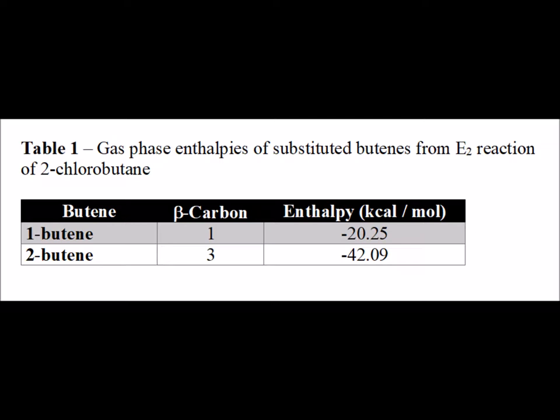Zaitsev's rule tells us that when there is a choice of possible products for an E2 elimination reaction, the most likely product is the most stable alkene, the one that is most branched. Here we can see that this is true quantitatively. The resulting product from abstraction at the first carbon gives us 1-butene with an enthalpy of reaction of minus 20 kcals per mole, whereas if we abstract at the third carbon, we get the product 2-butene, which has an enthalpy of minus 42 kcals per mole. We expect, and it is confirmed by Zaitsev's rule, that the product will be 2-butene.